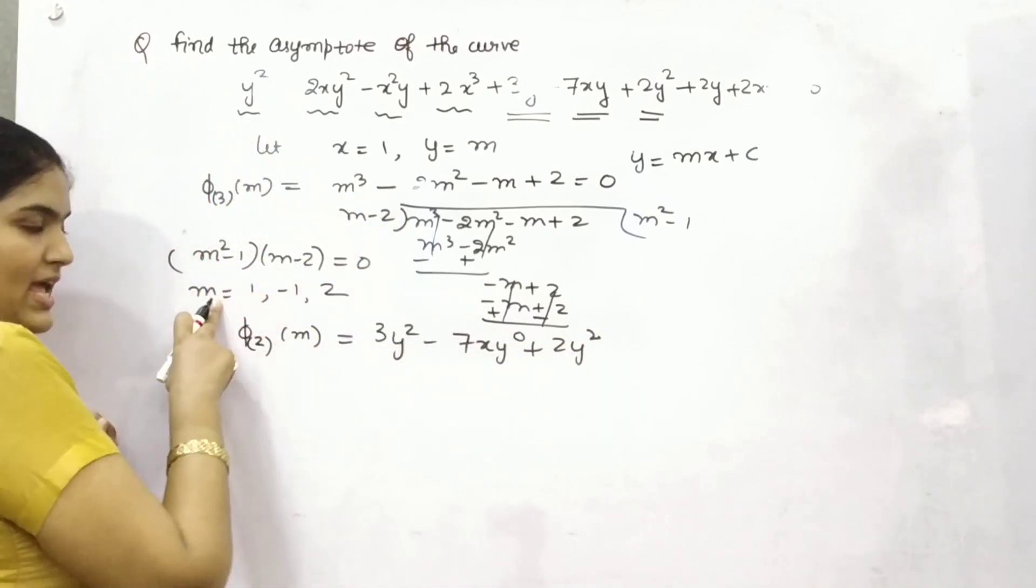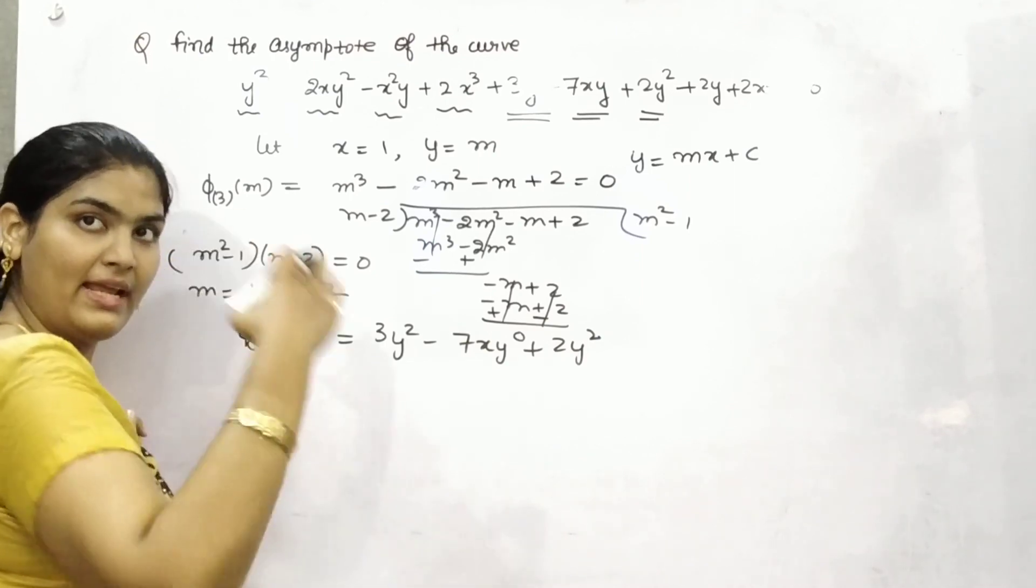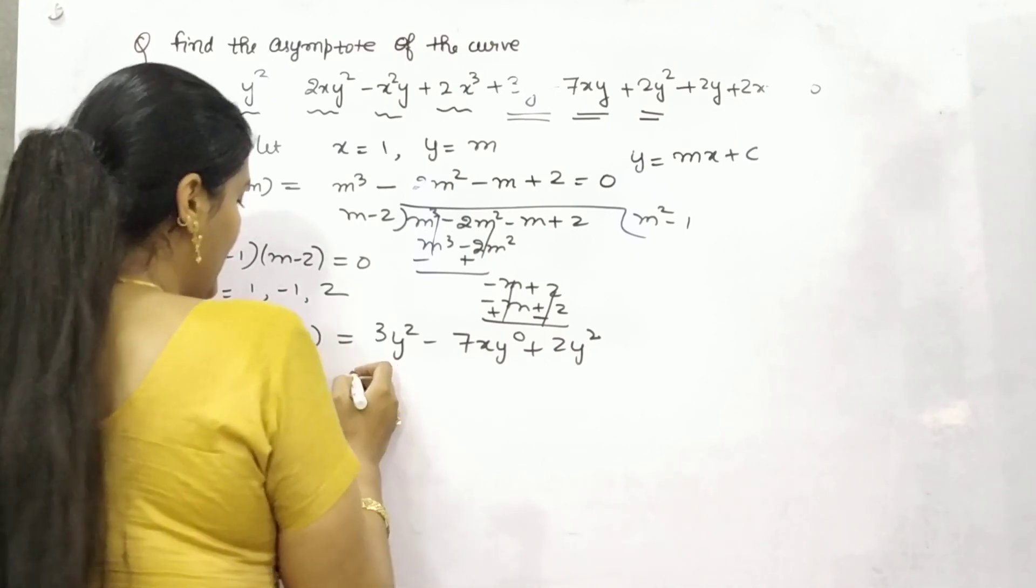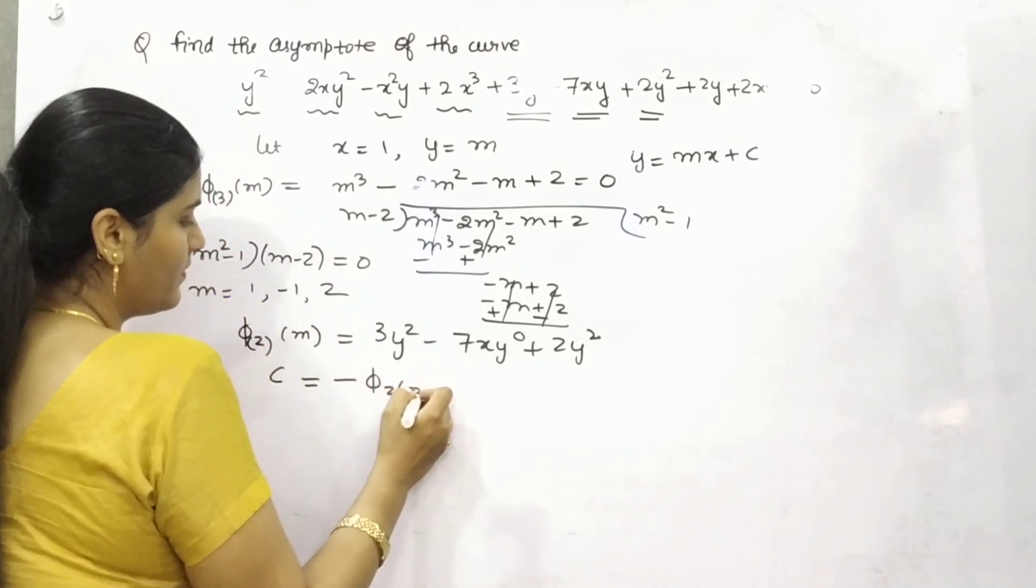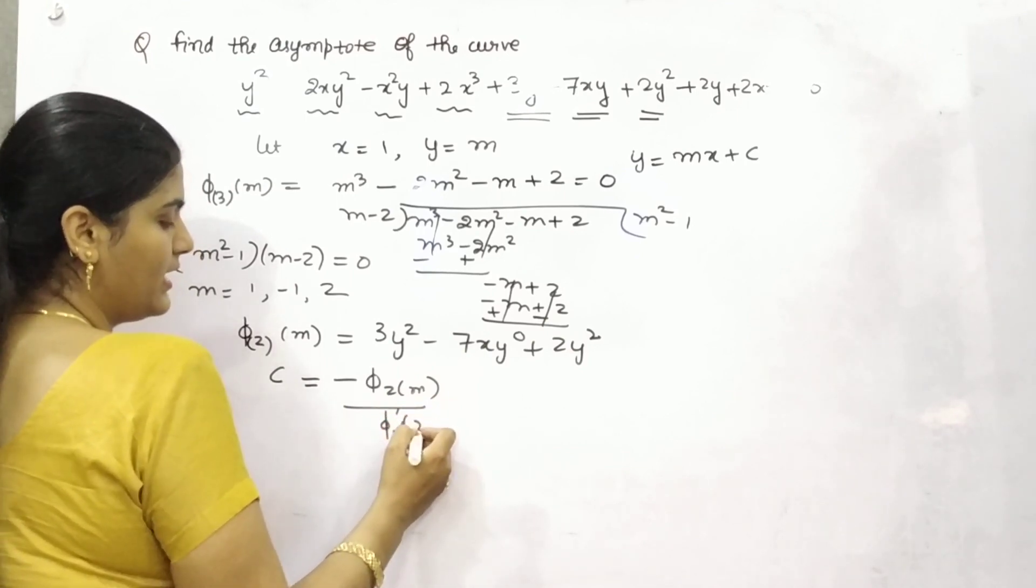So firstly find out m. Thereafter, the slope, that means that inclined asymptote. That means the value of c you need to find out. And that will be your minus 5m upon differentiation of your highest degree.